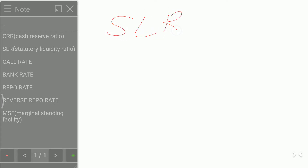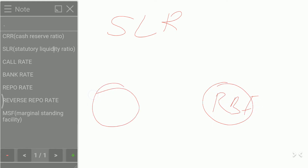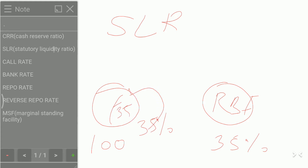Now SLR. SLR is the ratio of the total deposits of a bank which it is required to maintain with itself at the close of business every day in the form of cash, gold, and government approved securities. Suppose the total deposit of this bank is 100 rupees and SLR is 35%. So this bank is required to maintain 35 rupees with itself, meaning it won't use this 35 rupees to give loans to anybody.